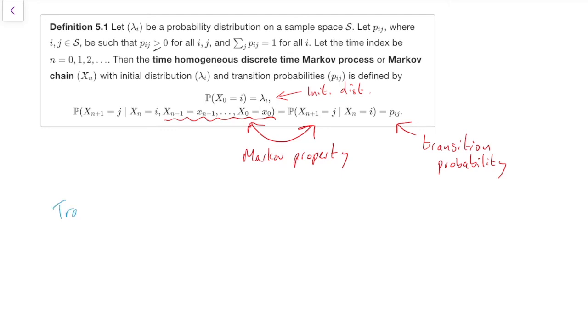So the transition matrix, which we will call capital P, is the matrix of all the p, i, j's. It will turn out later that it will be useful to have those written down in a matrix.